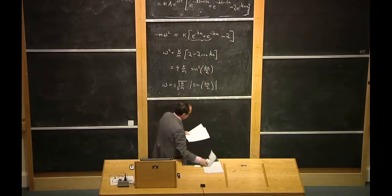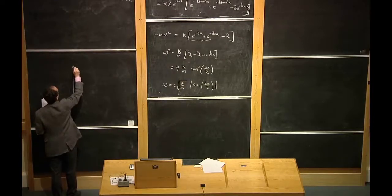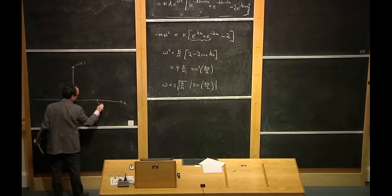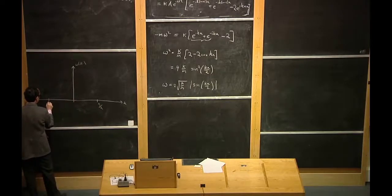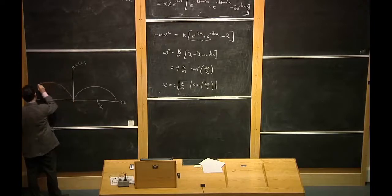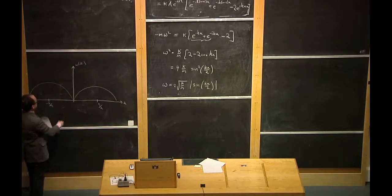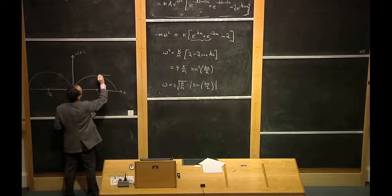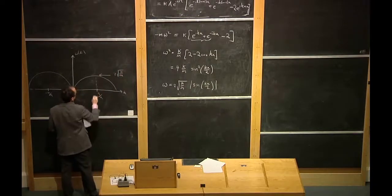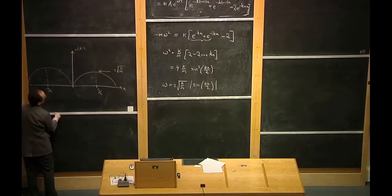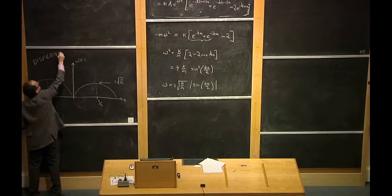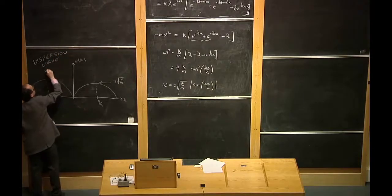It's worth plotting the answer. On the vertical axis we have ω(k), on the horizontal axis we have k. We put points at π/a and −π/a. The absolute value of sine looks like this — with the same height on both sides. The height of the curve is 2√(κ/M), and it has its peak at ±π/a. This curve is known as a dispersion curve — omega as a function of k.